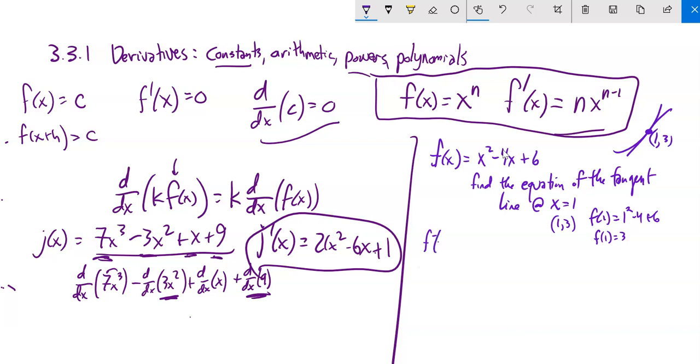I can do it a piece at a time. x squared, power rule, 2x to the first. I don't need to write the first. Four minus four. The derivative of x is one. And then the plus six is zero because that's a constant. So what I've done is I've taken the derivative of each of these pieces because they're added together.